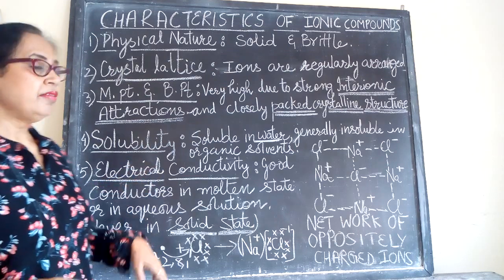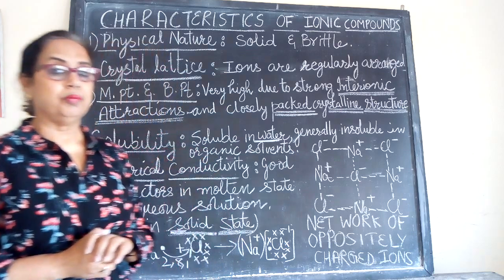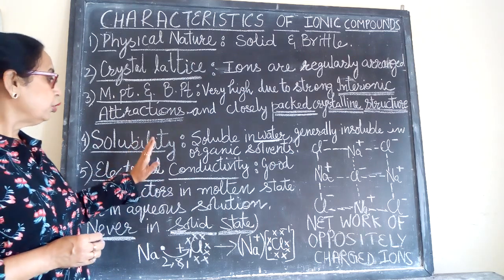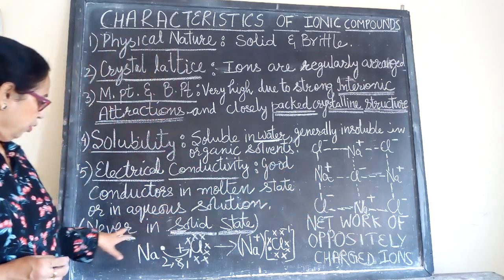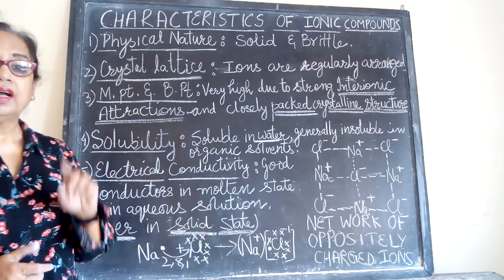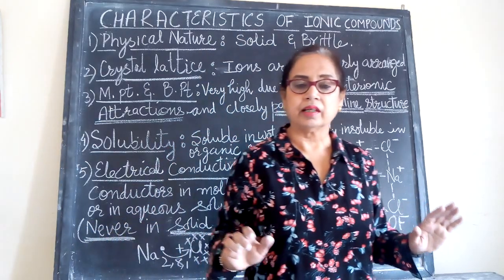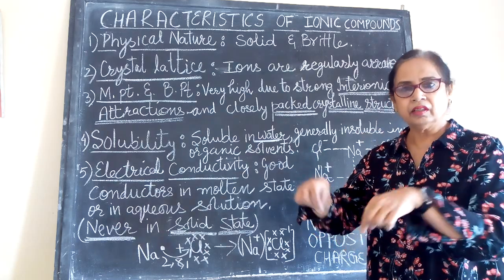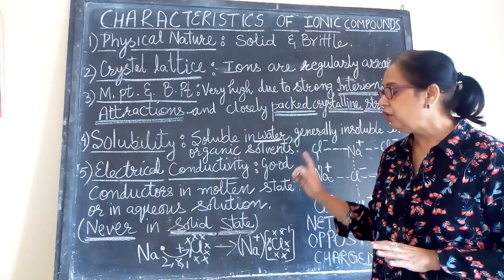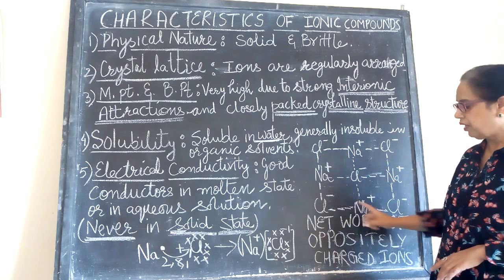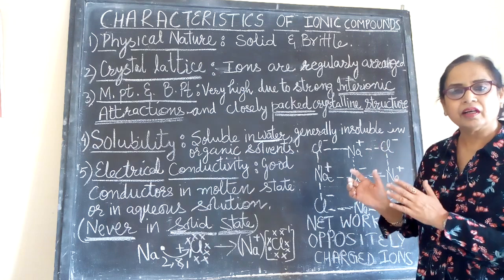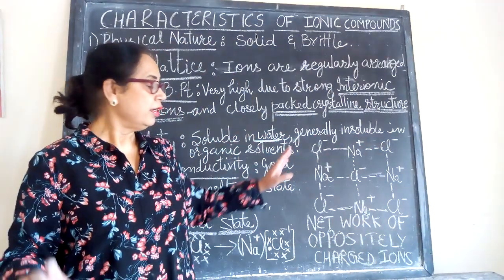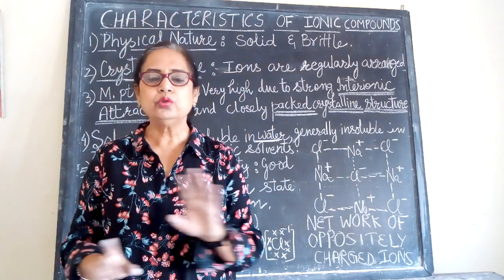The next property is electrical conductivity. When we talk about the electrical conductivity of ionic or electrovalent compounds, we go back to the crystalline structure. Ionic compounds never conduct electricity in the solid state. If you have common table salt and connect electric wires to it, it will not conduct electricity. In the solid state there is a closed network and the ions — cations and anions — are not free to move. There are no free mobile ions in a solid ionic compound, so solids do not conduct electricity.